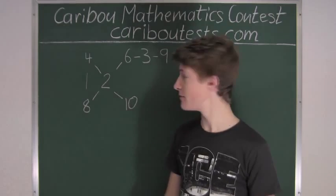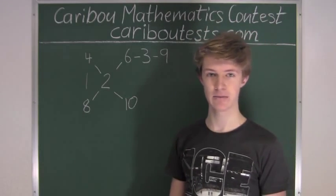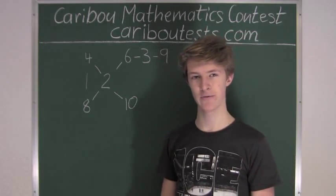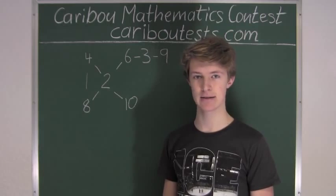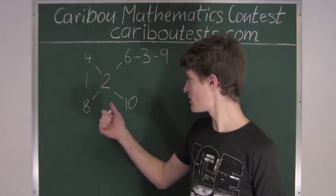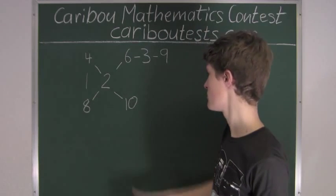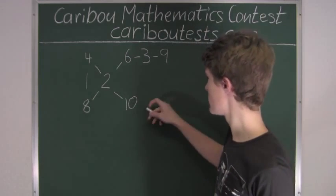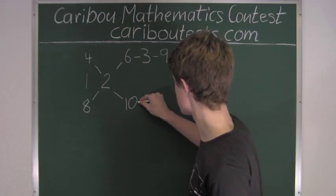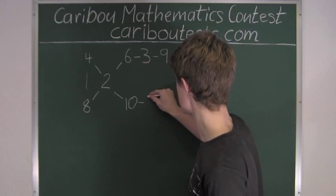Now let's go to 5. 5 is a prime number, so it has no factors, but it has one multiple here which is 10. We will write the 5 beside that 10.